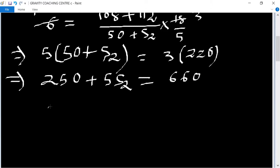Cancel 3 and 3, 220 upon 250 plus 5S2 equals 660. So therefore 5S2 equals 660 minus 250 equals 410.